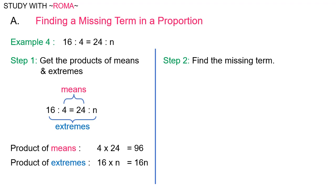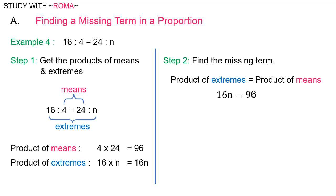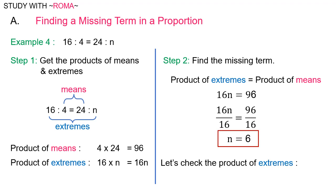Step 2: Find the missing term. The product of extremes is equal to the product of means. Therefore, 16n is equal to 96. Divide both sides by 16: 16n divided by 16 is equal to n, and 96 divided by 16 is equal to 6. Therefore, n is equal to 6. To check, let's get the product of extremes: 16 times n equals 16n, which is equal to 16 times 6, which is 96. Therefore, n is equal to 6.